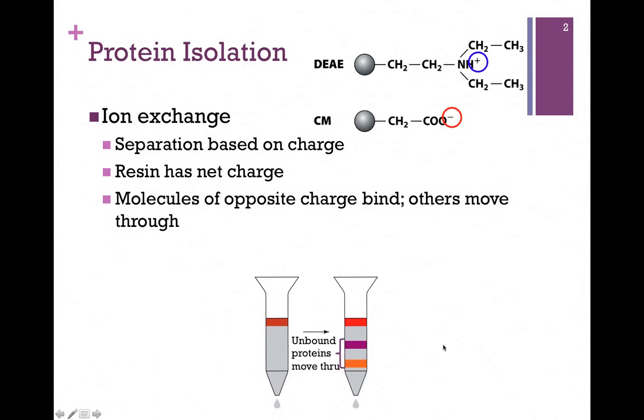Therefore, we have successfully separated our protein of interest and gotten rid of all of the other proteins that we're not interested in. The problem is now our protein is bound to the column, and we need to get it off the column. How do we do that?